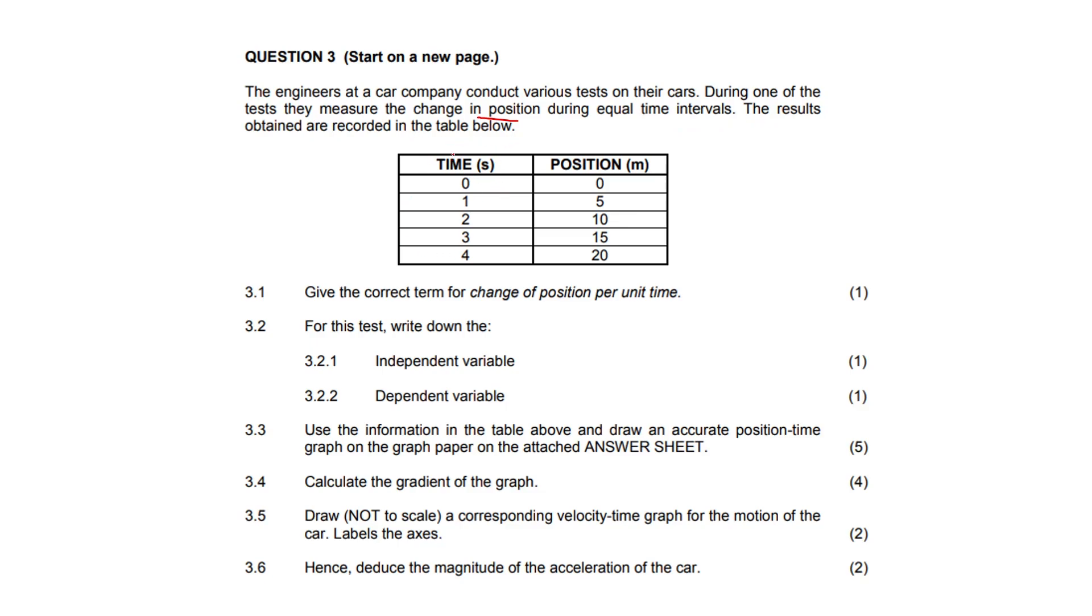So we have time in one column and position in the other column. 3.1. Give the correct term for change of position per unit time. That is our average velocity. Just something you got to remember. 3.2. For this test that they just conducted at the top, write down the independent variable and the dependent variable.